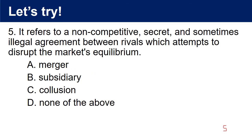Question 5: It refers to a non-competitive, secret, and sometimes illegal agreement between rivals which attempts to disrupt the market's equilibrium. A. Merger. B. Subsidiary. C. Collusion. D. None of the above. The answer is C. Collusion.